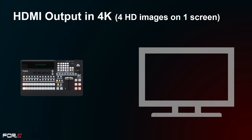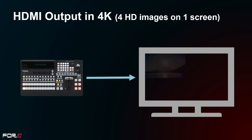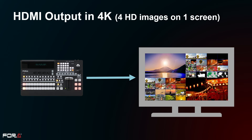The HVS 190 series inherits the HDMI output function from the HVS 490 and is equipped with one HDMI output channel. The HDMI output can be used as either HD output or 4K output. In 4K output mode, video sources and multi-viewers can be assigned to display in quad screen mode.